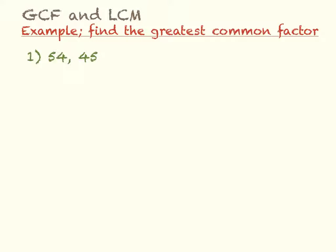The greatest common factor and least common multiple. For these first few examples we're going to be finding the greatest common factor between two numbers. To find the greatest common factor, you want to first find the factors of the two numbers.